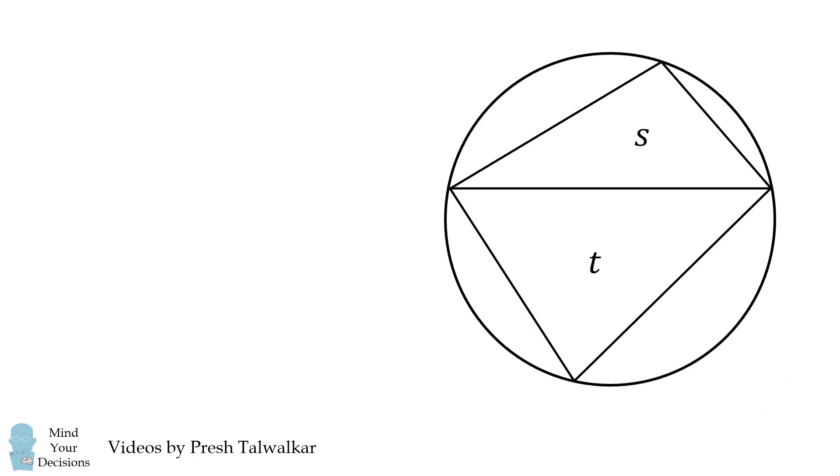When I tried to solve this problem, I spent a lot of time trying to figure out a relationship between s and t. We are given that s is less than t and we know both have to be positive because they represent areas.